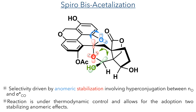The remarkable stereoselectivity of this reaction is attributed to the anomeric effects exhibited by the bisacetal system. The anomeric effect is stabilisation occurring due to hyperconjugation between the filled lone pairs on oxygen and the σ* antibonding orbital of the carbon-oxygen bond. By carrying out the reaction under thermodynamic control, where the acetalisation is reversible, the product formed favours the diastereomer with the greatest anomeric stabilisation.